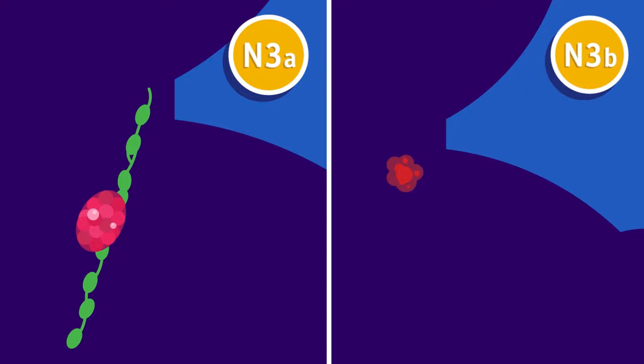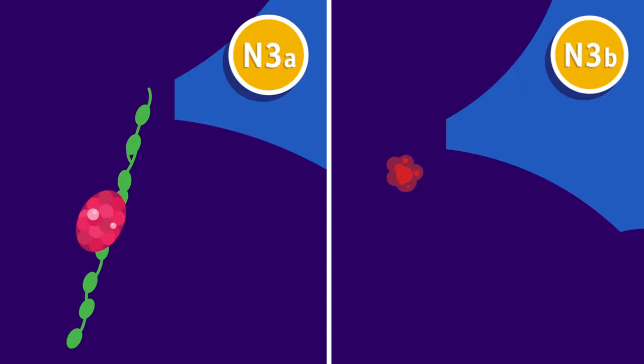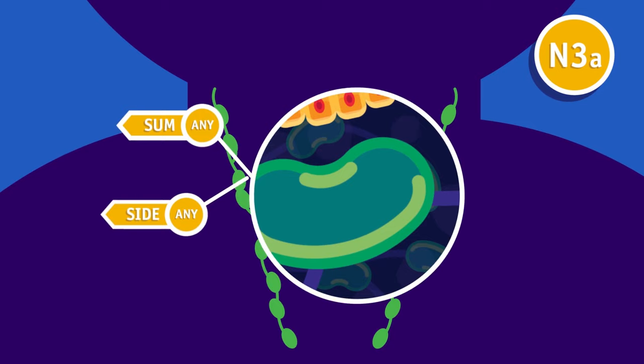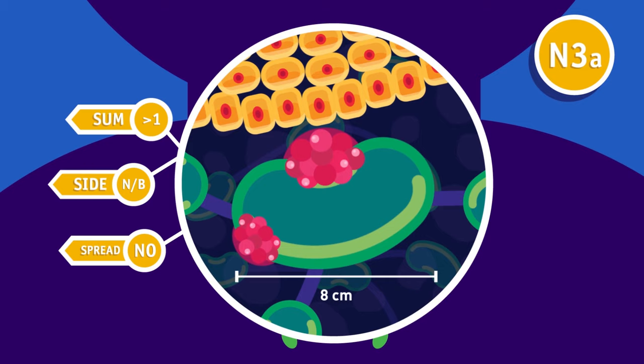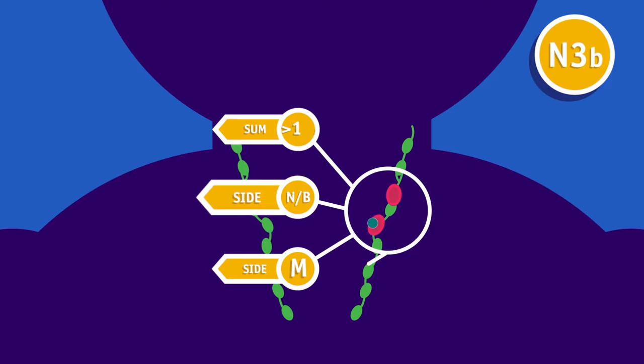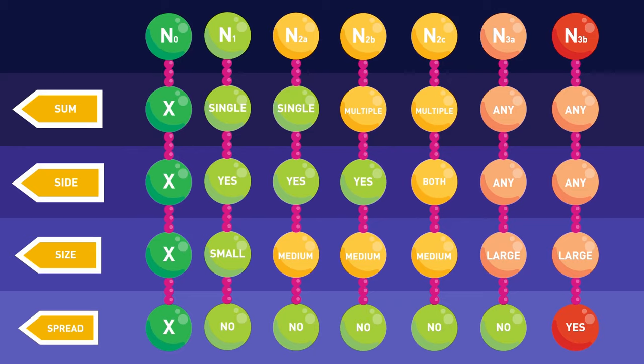N3 is split into two groups, N3A and N3B. N3A means that one lymph node containing cancer cells is larger than 6 cm across, and the cancer has not spread into tissue surrounding the lymph node. N3B means any number of lymph nodes contain cancer, and the cancer has spread into tissue surrounding the lymph node. These stages describe the tumour progression in the surrounding lymph nodes before it metastasizes further.